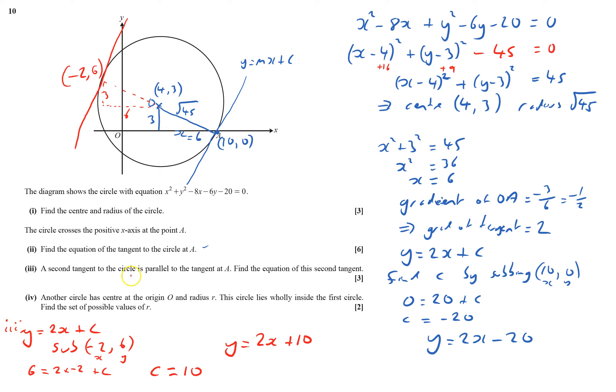The last one: another circle with center at O lies wholly inside the first circle. Find the possible values of r. The radius here is r. It can't be too big because the whole distance here is root 45.